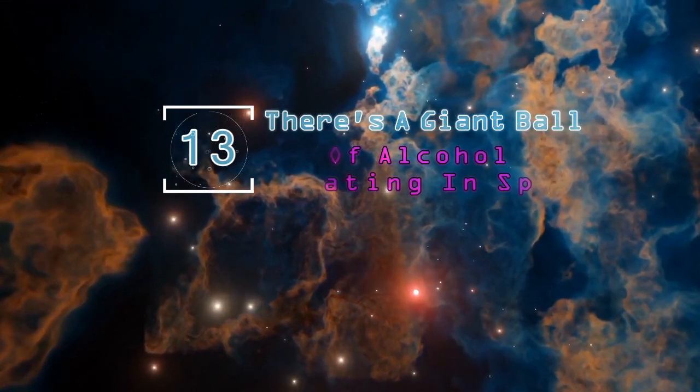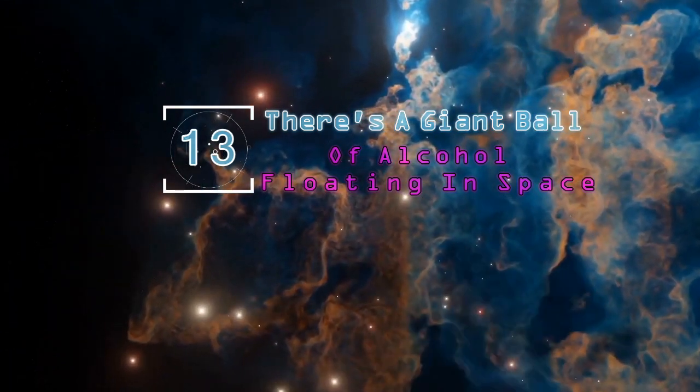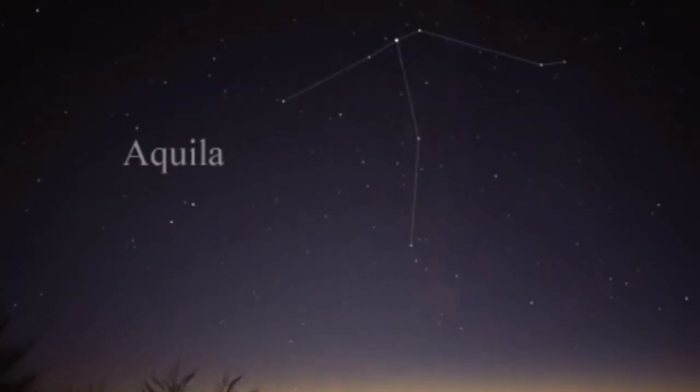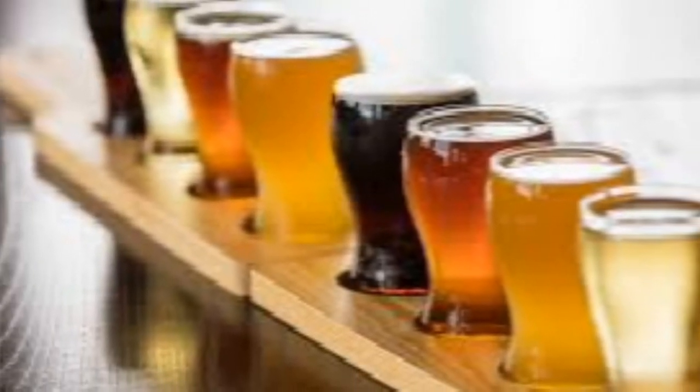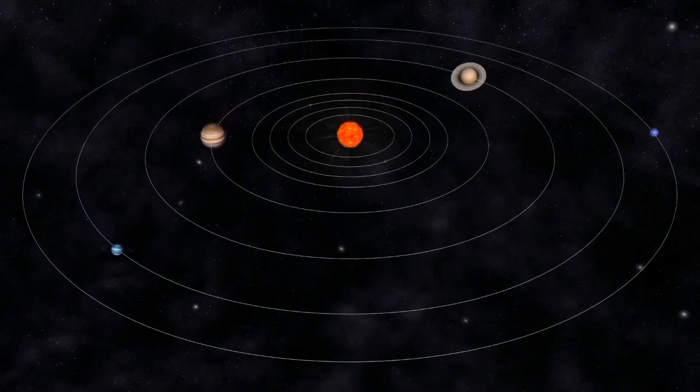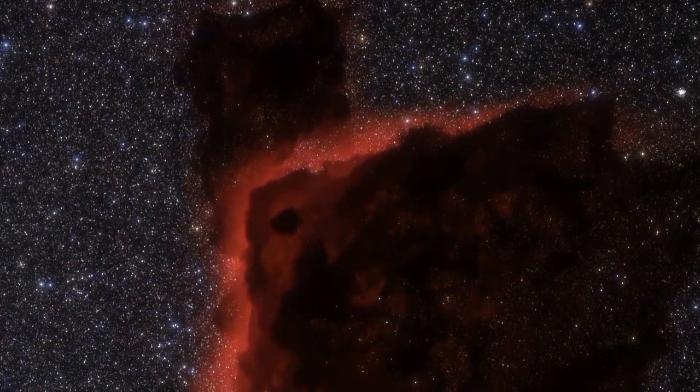There's a giant ball of alcohol floating in space. Way back in 1995, scientists stumbled upon a massive brewery of alcohol and spirits some 26,000 light years away from Earth. And apparently, there's enough to go round.